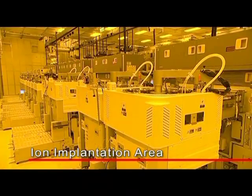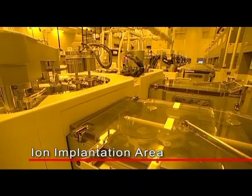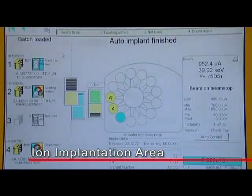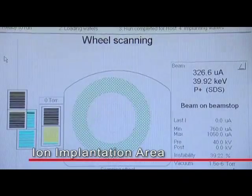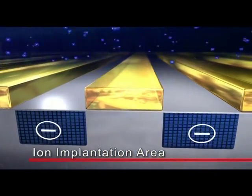Ion implantation is a process used to implant charged ions into a specific region of the silicon wafer. Conductivity is changed by controlling the concentration and depth of the ions.